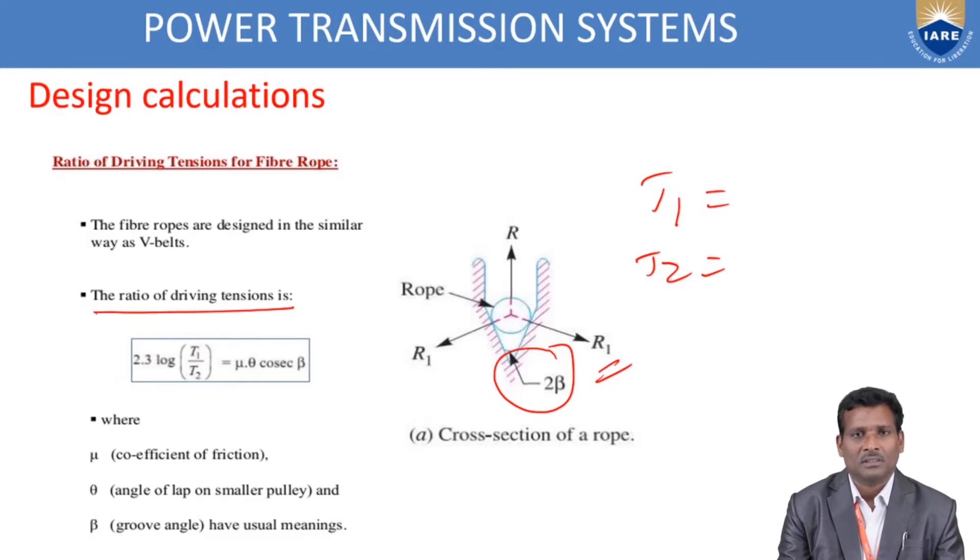By calculating T1 and T2, use this formula: 2.3 log(T1/T2) equals μ·θ·cosecant(β). μ is the coefficient of friction between the rope and the groove pulley, θ is the angle of lap, same as in flat belt drive arc of contact. β is the groove angle.